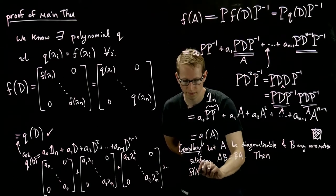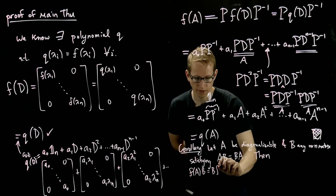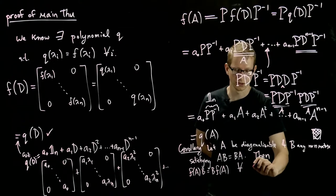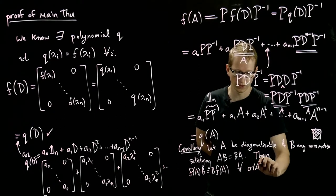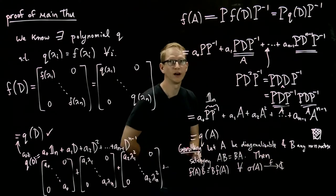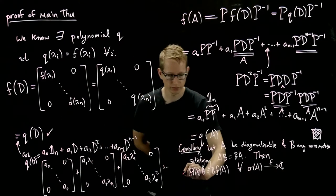Then f of A B equals B f of A for all functions that are defined on the eigenvalues of A. And how do we prove this?